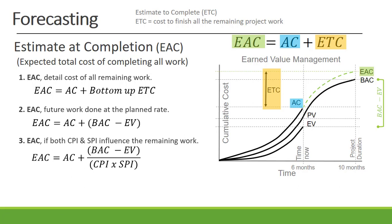Then, if both the CPI and the SPI — that is the Cost Performance Index and the Schedule Performance Index — influence the remainder of the work, the Estimate at Completion is calculated as: Actual Cost plus Budget at Completion minus Earned Value, divided by CPI times SPI.